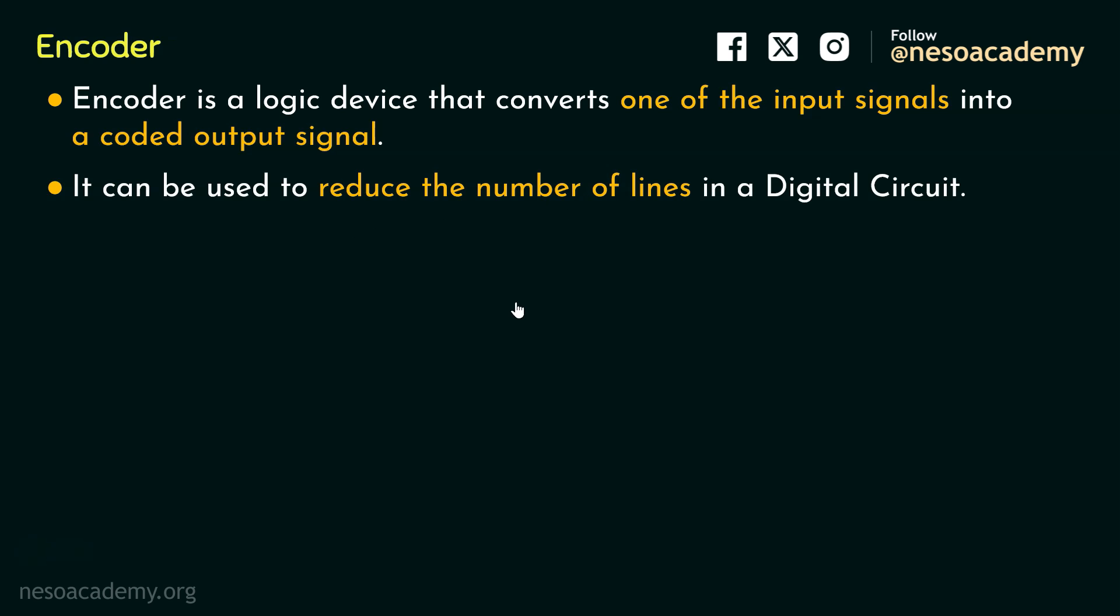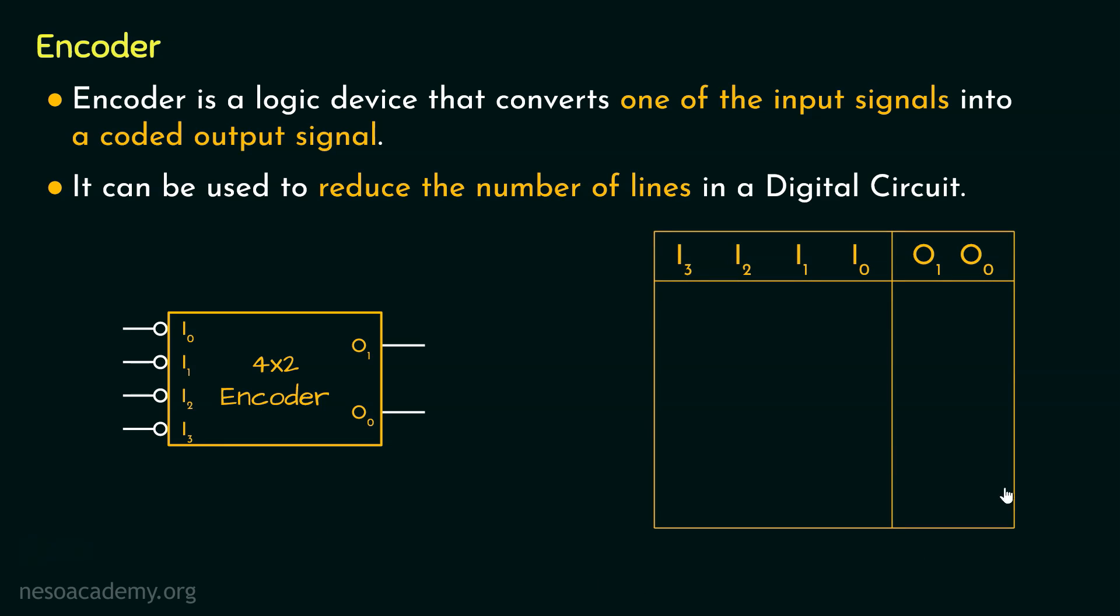Now let me show you how it is done. Consider this encoder. As you can notice, it is a 4 by 2 encoder, that is, it has got 4 inputs and 2 outputs. So clearly, from the 4 input lines, the encoder is going to produce different sequence of outputs which will correspond to each one of the inputs. Now let me show you that using the truth table.